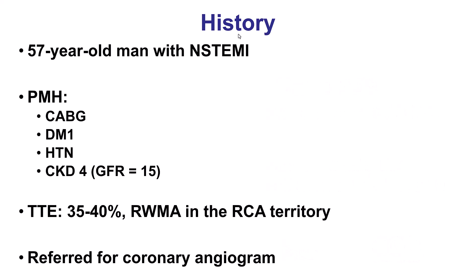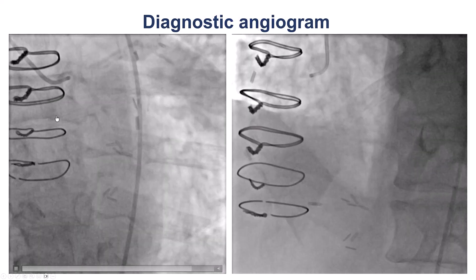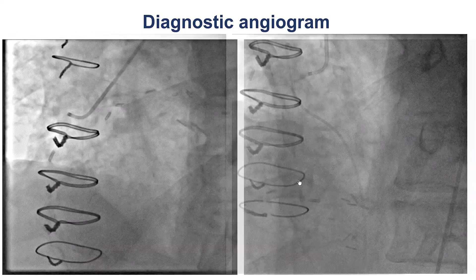The patient was a 57-year-old gentleman who presented with non-STEMI. He did have previous coronary bypass, diabetes, hypertension, and chronic kidney disease with a GFR of 15. He was found to have an ejection fraction of 35–40% with inferior regional wall motion abnormalities. Coronary angiography showed severe disease on the left system, CTO of the right coronary artery with heavy calcification.